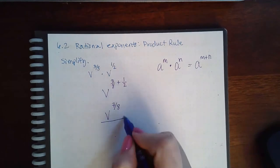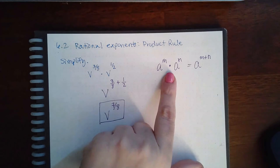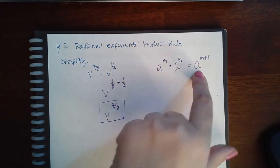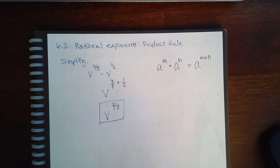So this is the final answer and that's all you're doing is applying this rule, which means as long as the bases are the same, you're going to have that same base and the new exponent will be the first exponent plus the second exponent.